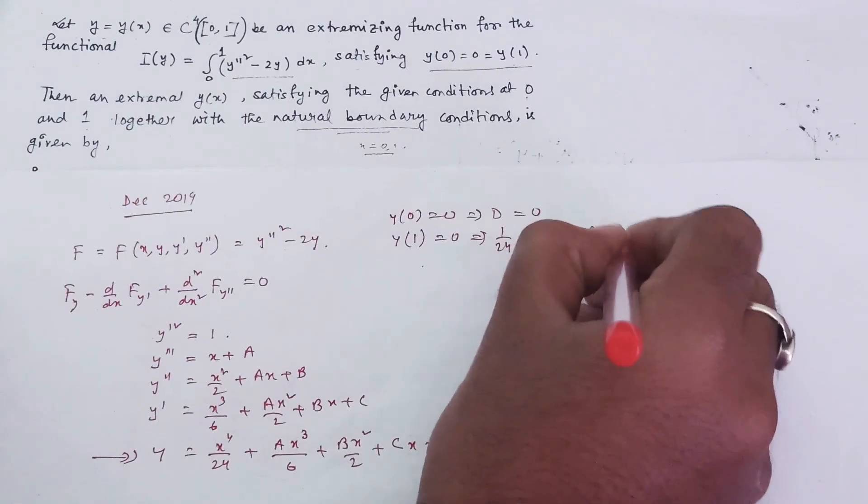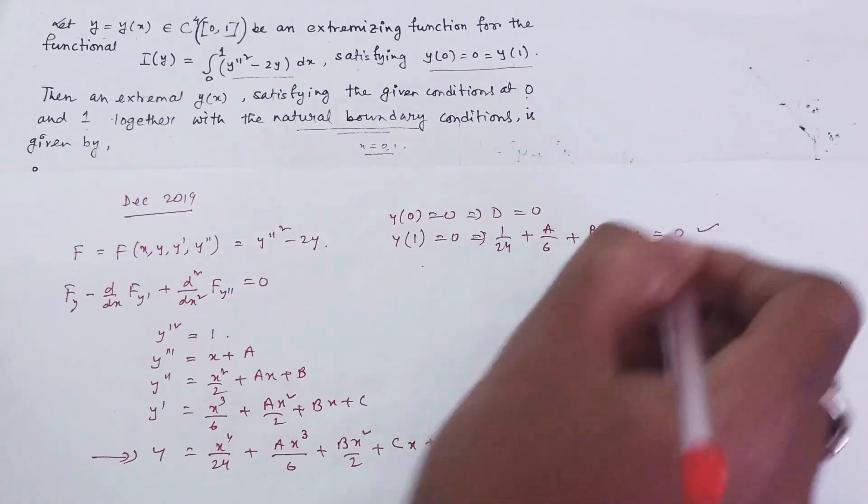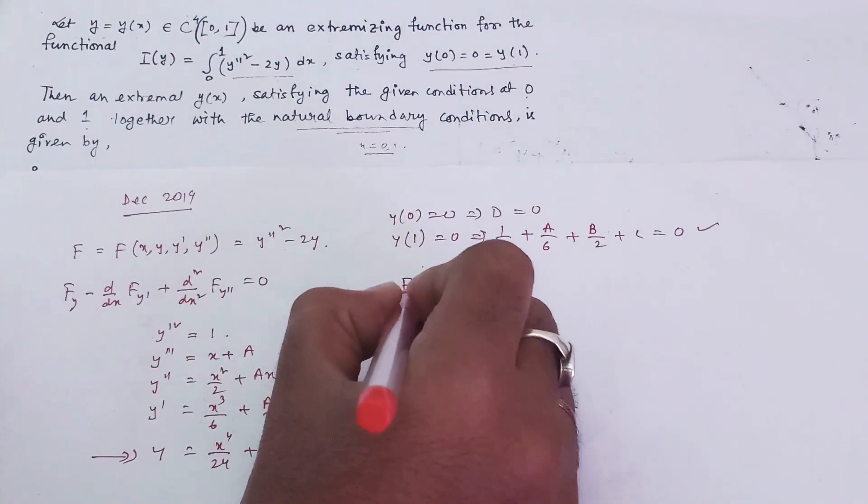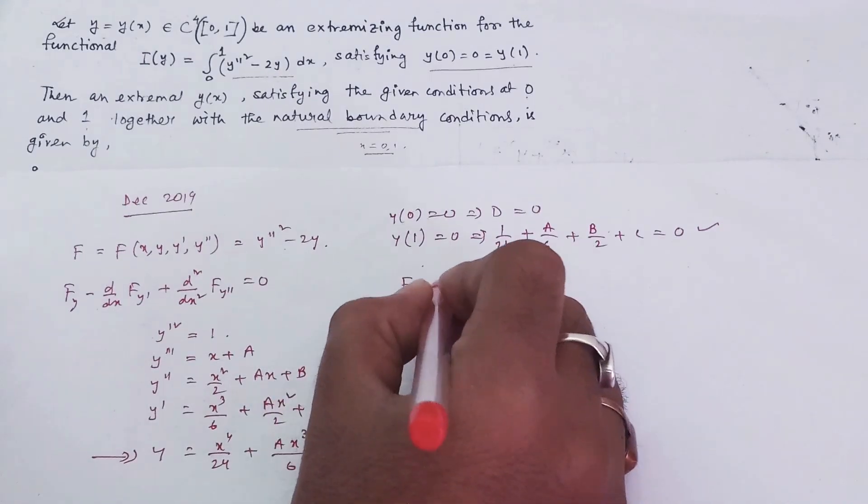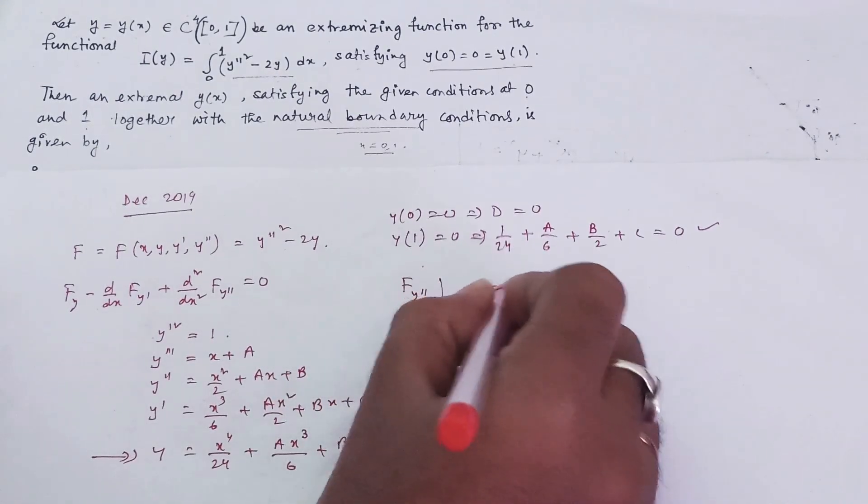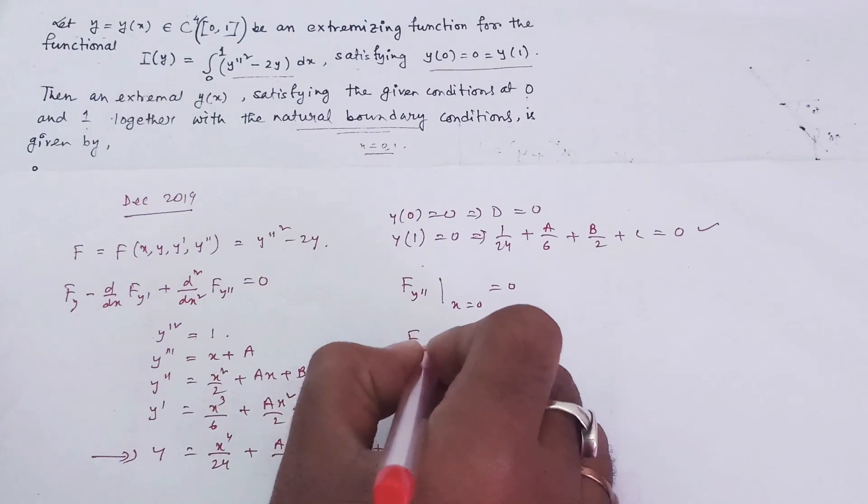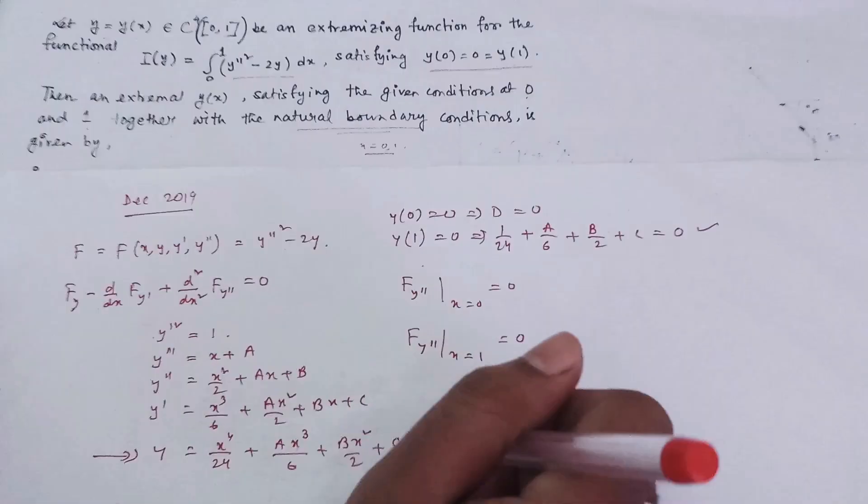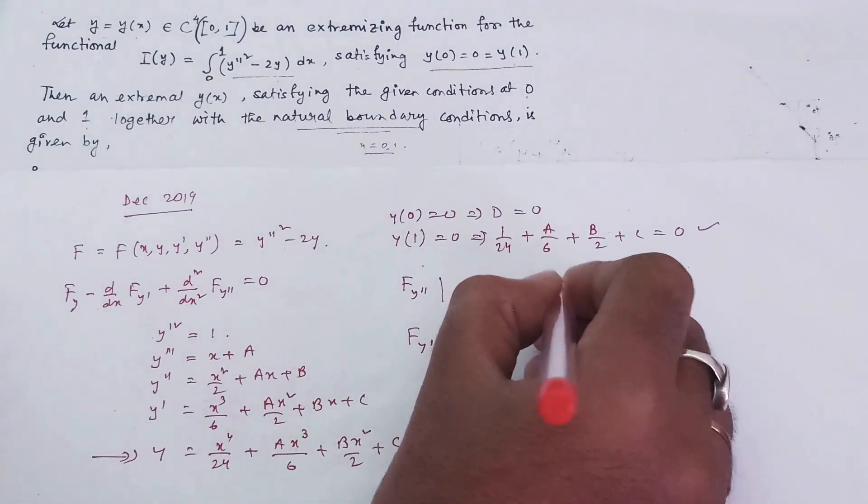Now use the natural boundary conditions: f_y'' at x = 0 equals 0, and f_y'' at x = 1 equals 0. Using these two conditions, you will find another two equations.